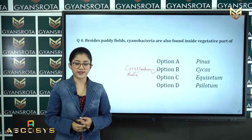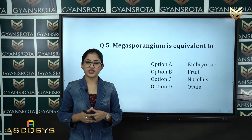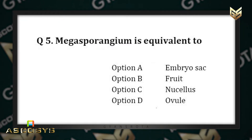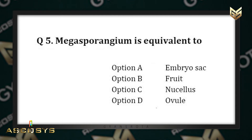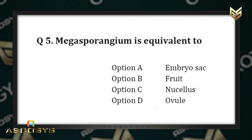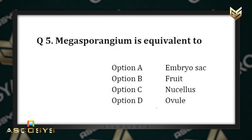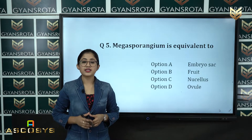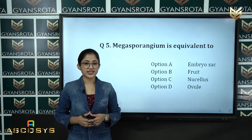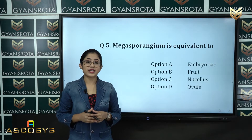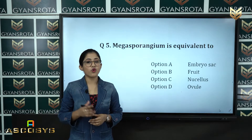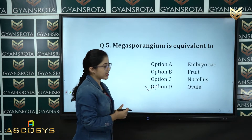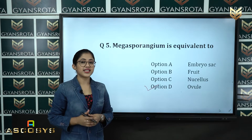Question number five: megasporangium is equivalent to — option A: embryo sac, option B: fruit, option C: nucellus, option D: ovule. This is from the chapter sexual reproduction in flowering plants. The correct answer is option D — megasporangium is equivalent to the ovule.